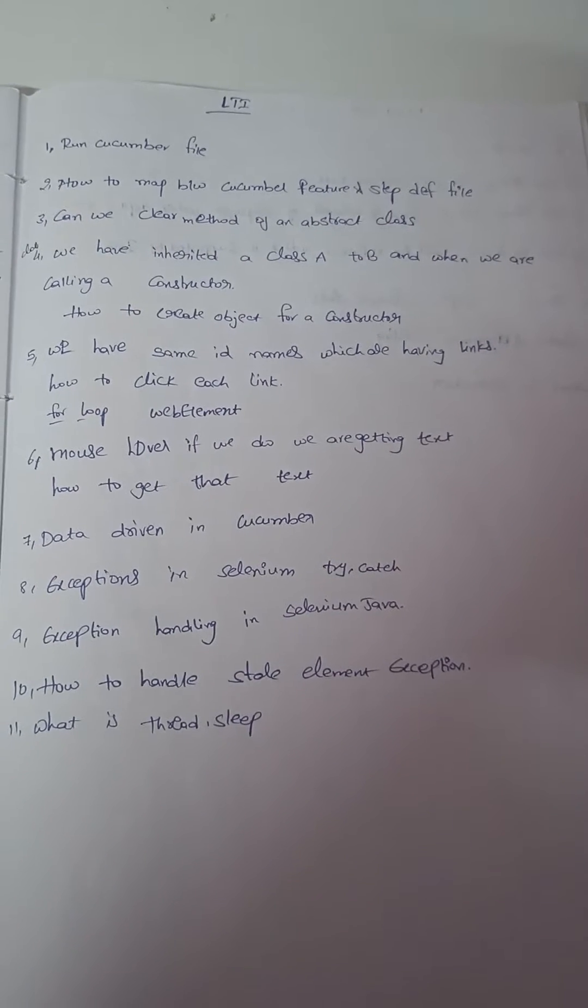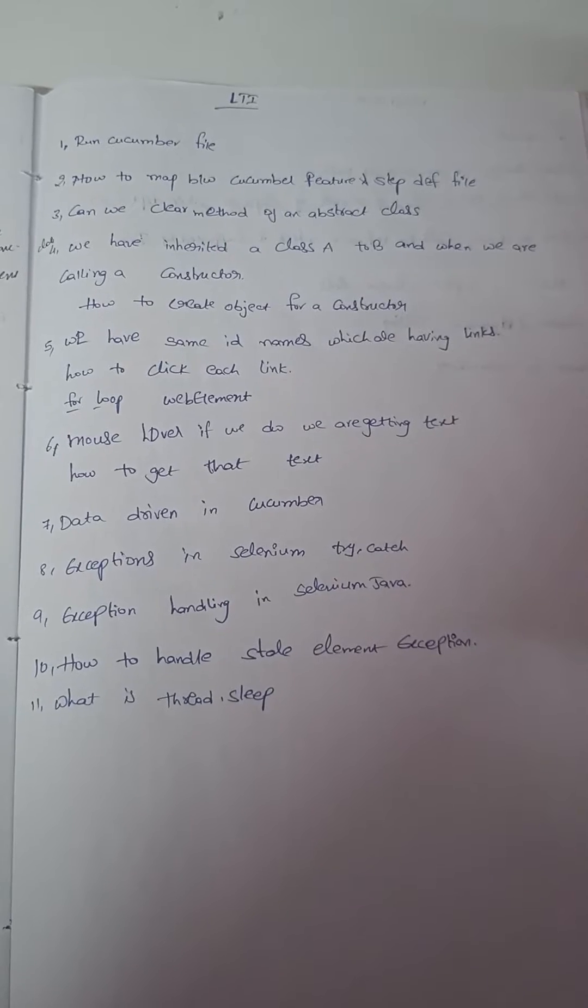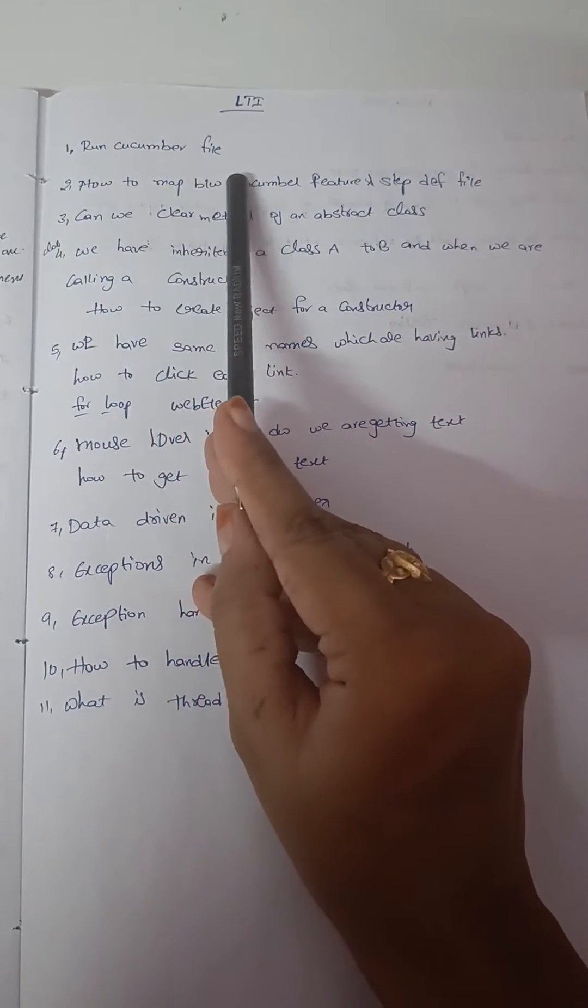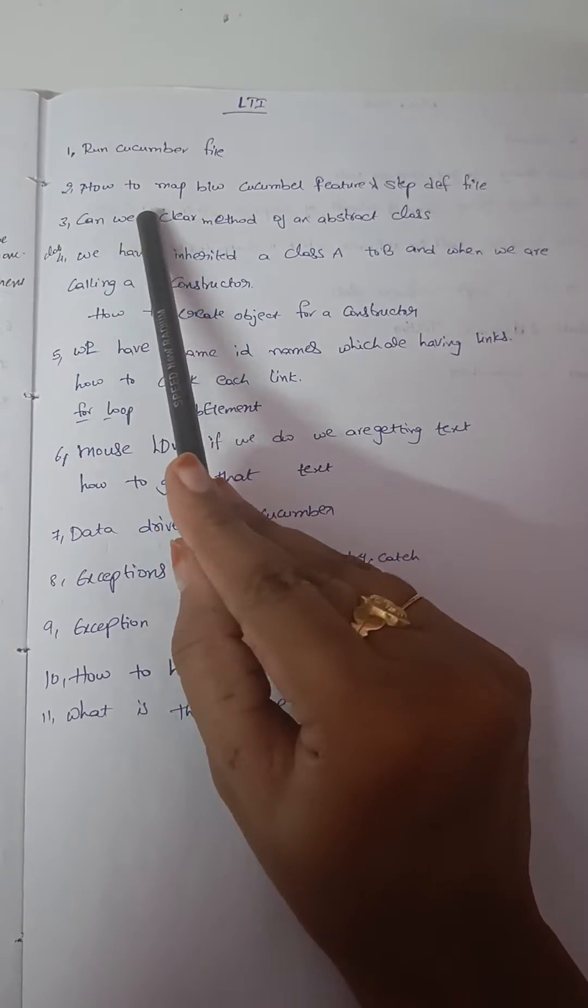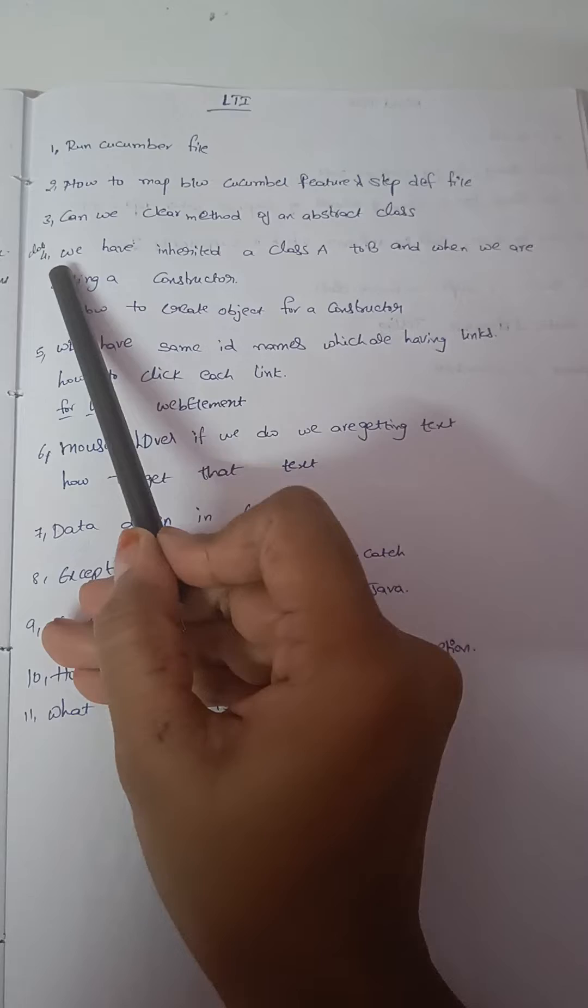Hello all, these are interview questions asked in an LTI automation testing interview. First question: how will you run a cucumber file? Second question: how to map between cucumber feature file and step definition file?